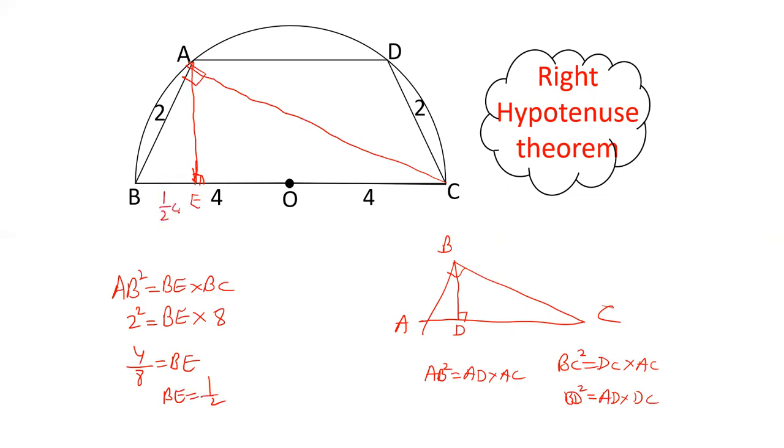If I draw a perpendicular here, then this length is half centimeter. The same is right hypotenuse theorem. It is 90 degrees, it is perpendicular. So CF is also half centimeter. Now see, EF's value is removed. So EF's value is BC minus BE minus CF. BC is 8, half and half is 1. It is 7 centimeter.